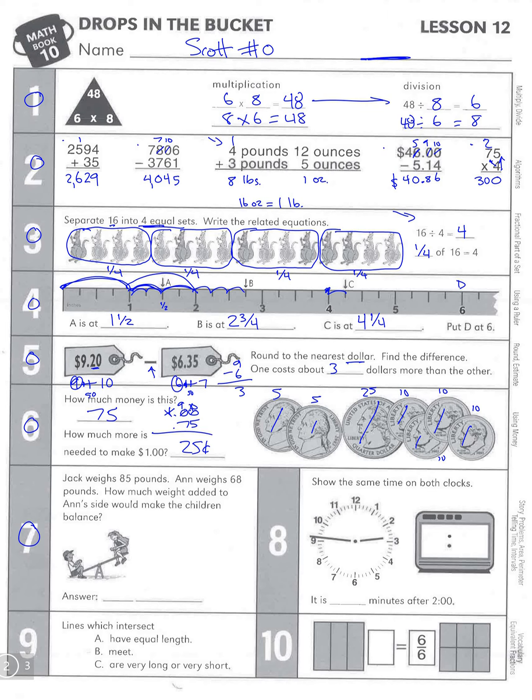Number 7: Jack weighs 85 pounds, Ann weighs 68 pounds. How much weight added to Ann's side would make the children balance? We need to find the difference. We're trying to find how much more we would need to add to Ann's weight to get to 85. So this is our comparison bars: Jack is 85, and Ann is 68. What is that amount we need to figure out?